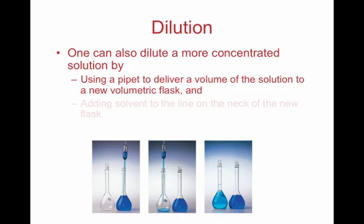Another way to make a solution, if you already have a solution, is to dilute it. One can dilute a solution by using a pipette to get a known volume of the original solution, adding it to another volumetric flask, and then diluting — or adding solvent, the same solvent you started off with, usually water — to the new flask. It's just like diluting orange juice, or if you have concentrated orange juice, diluting that down. Notice that the concentration is less; you can tell because of the darker color.